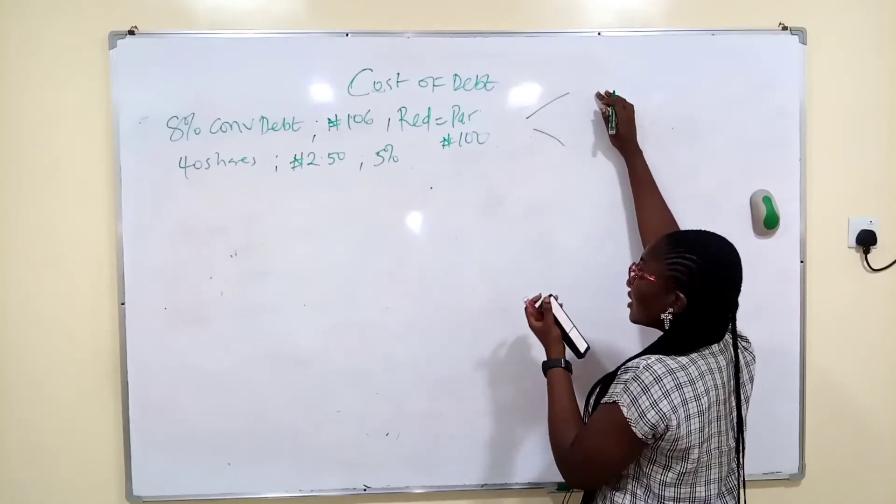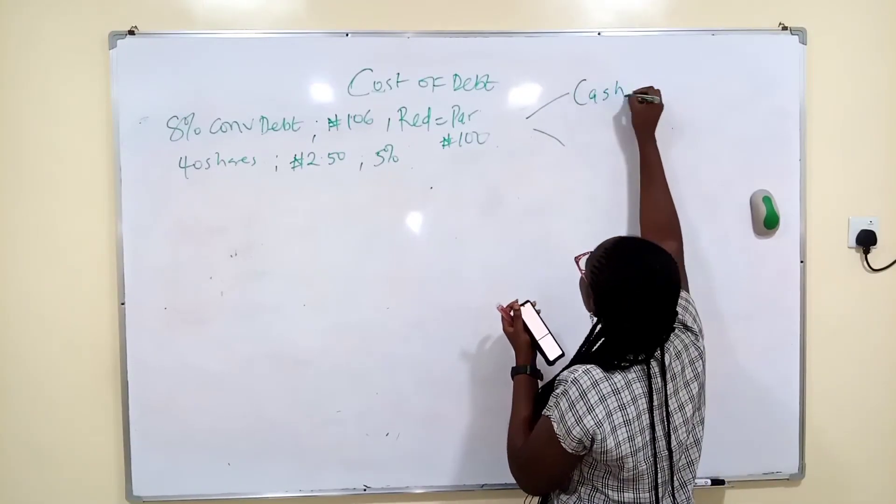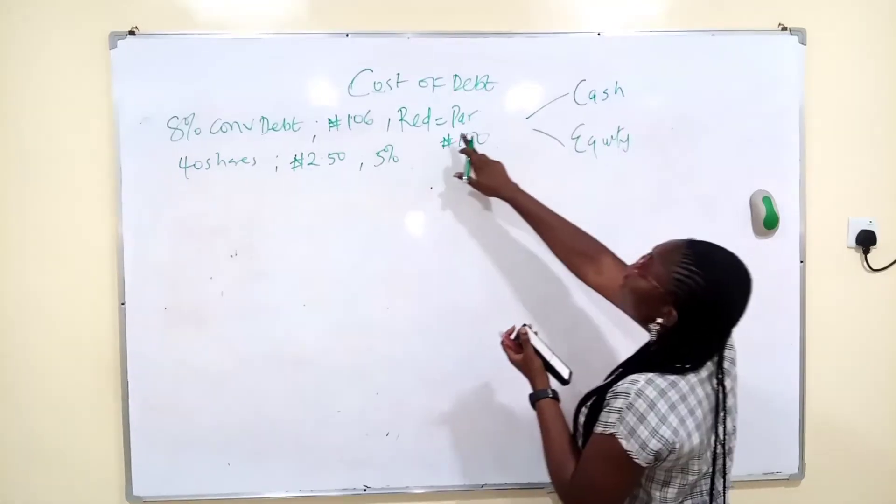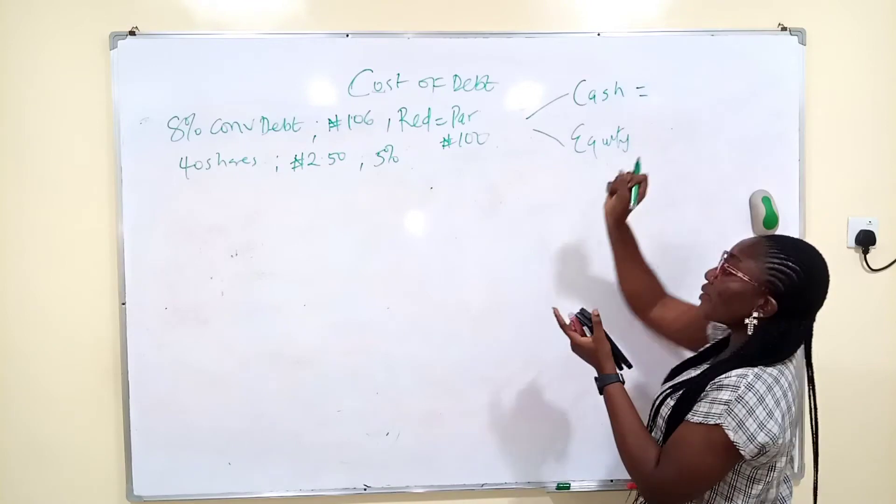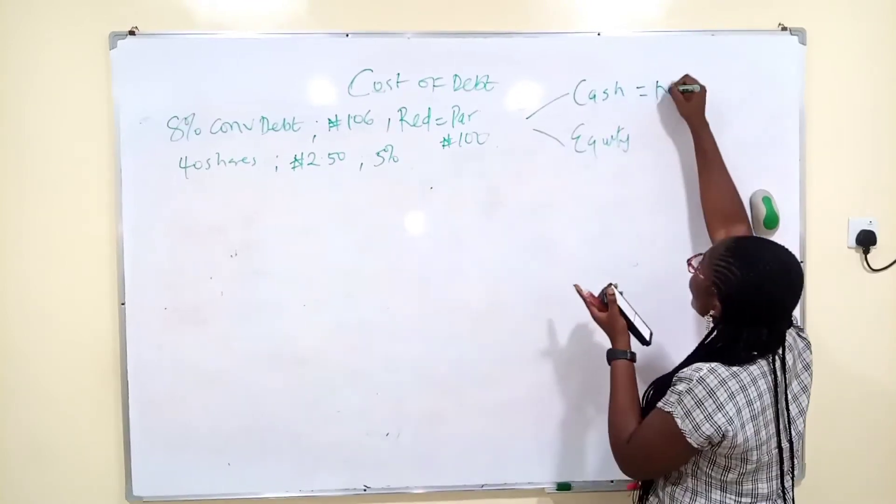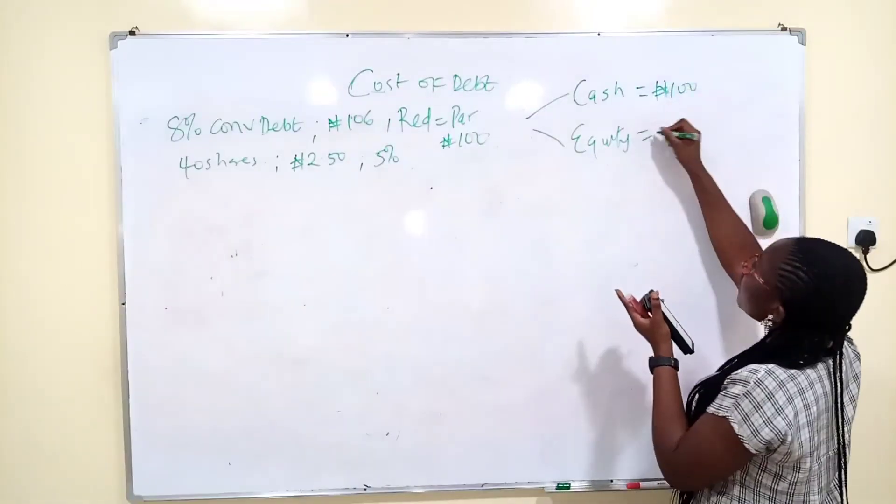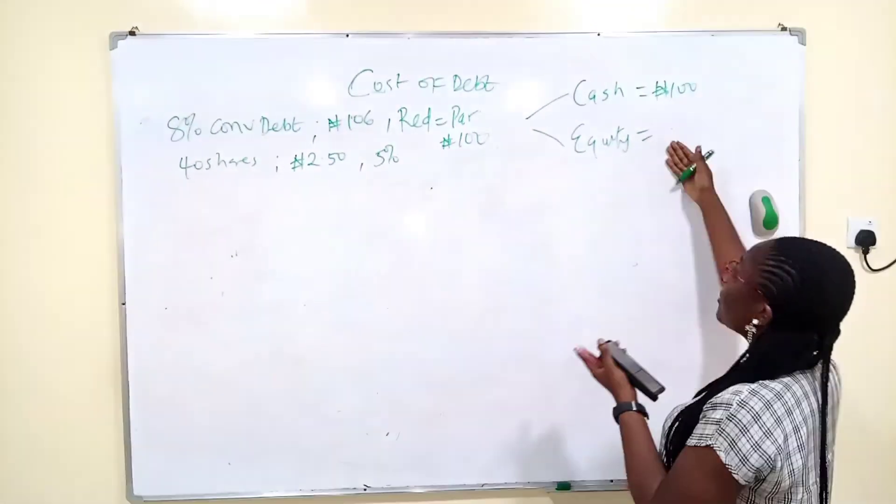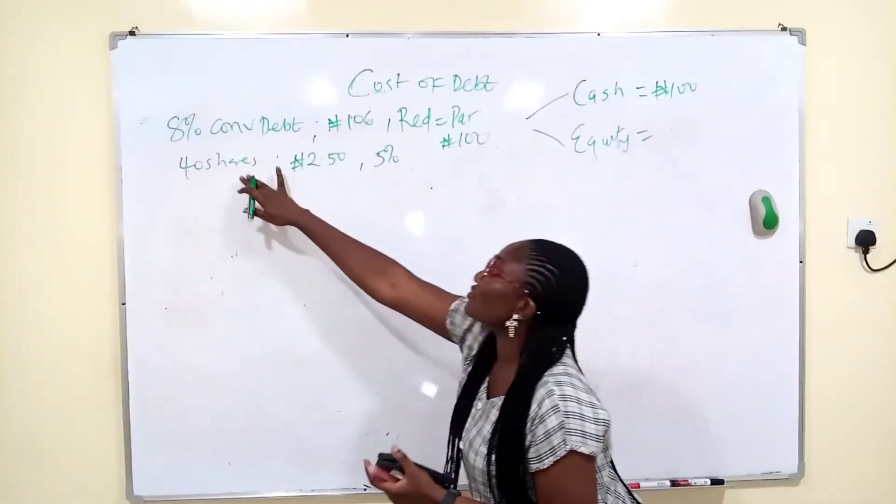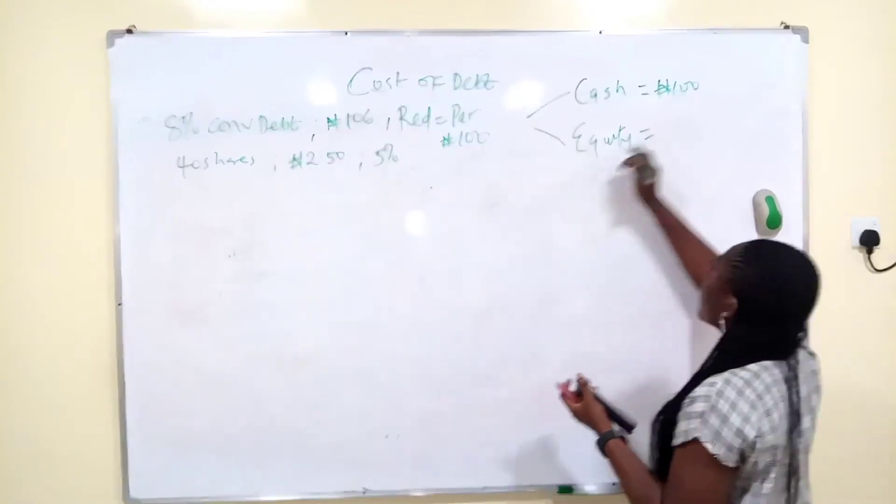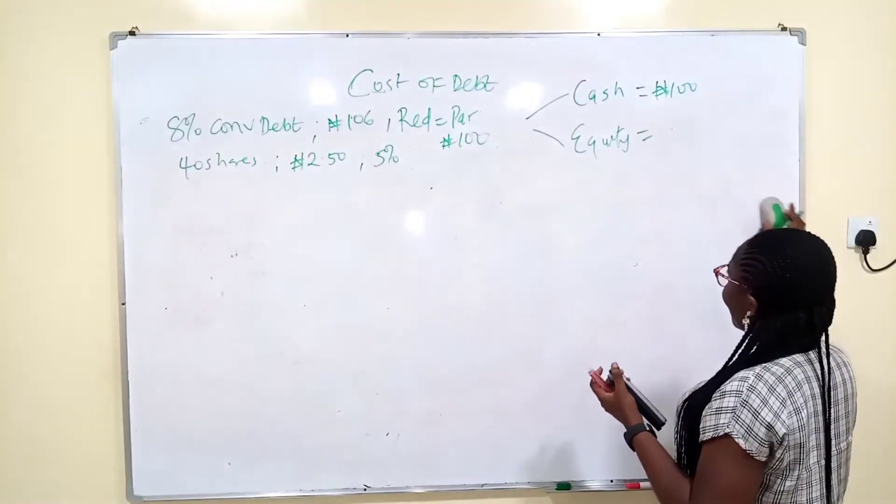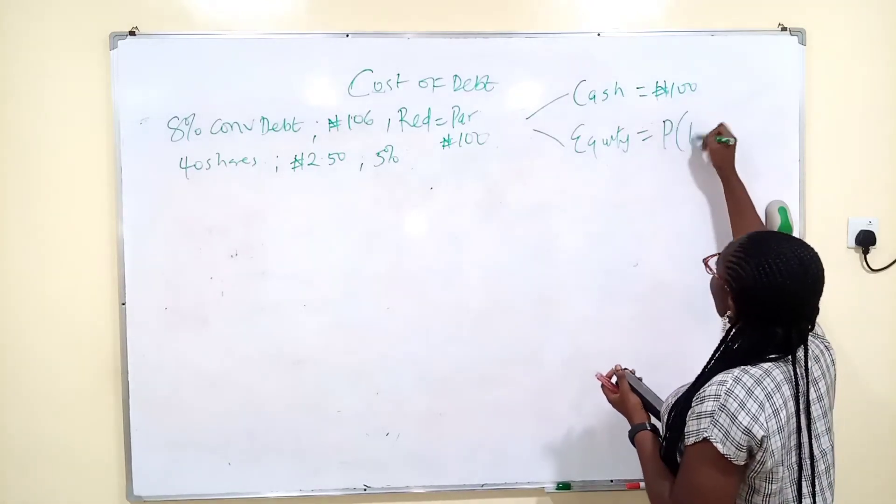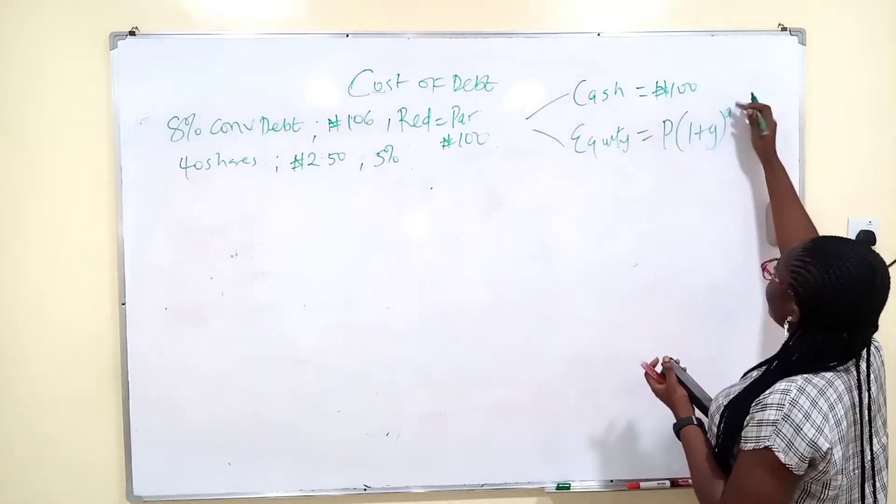So remember that I explained the convertible debt earlier, right? That the debt holder has the option to convert to cash or equity. Now, if he's looking at cash, they said it to be redeemed at par. They will give him back his cash at par, that's at 100 Naira. Now, if he's converting to equity, this is just a little twist in this question. They will give you the value of equity straight away. But now, these variables here, they send you to calculate.